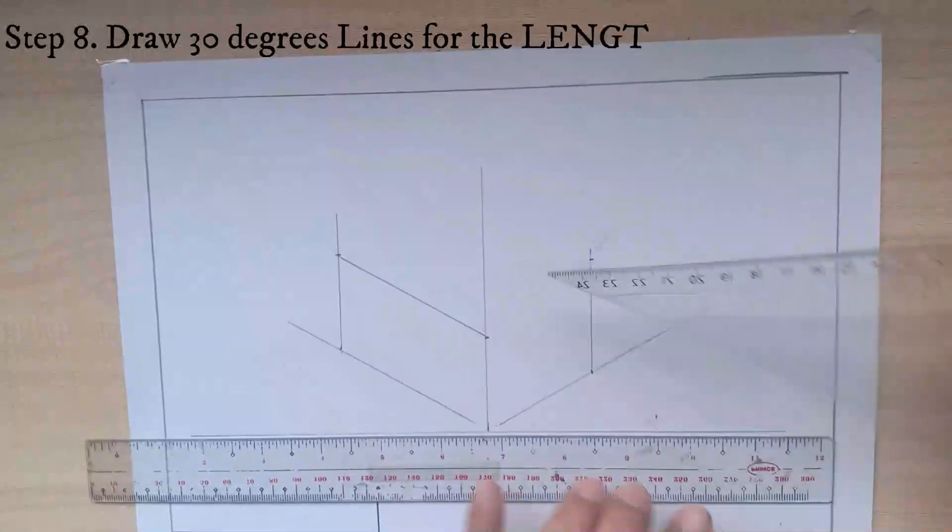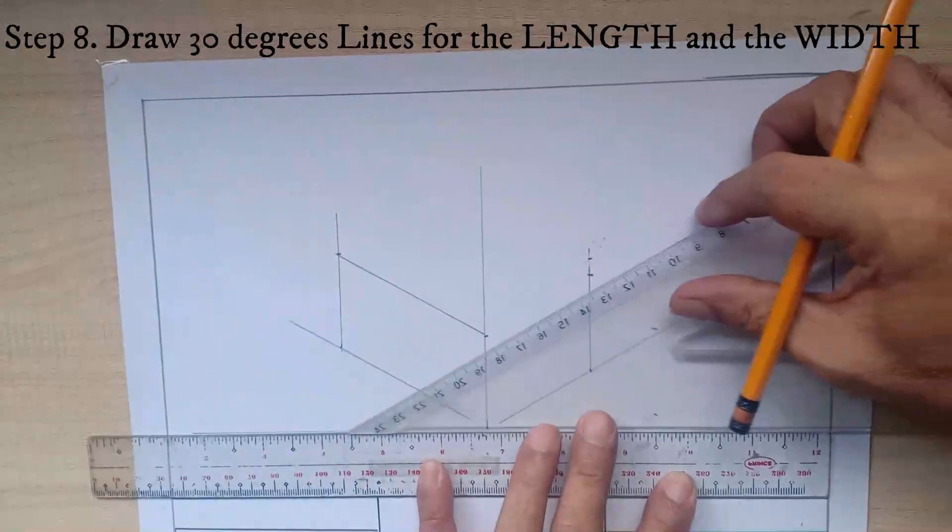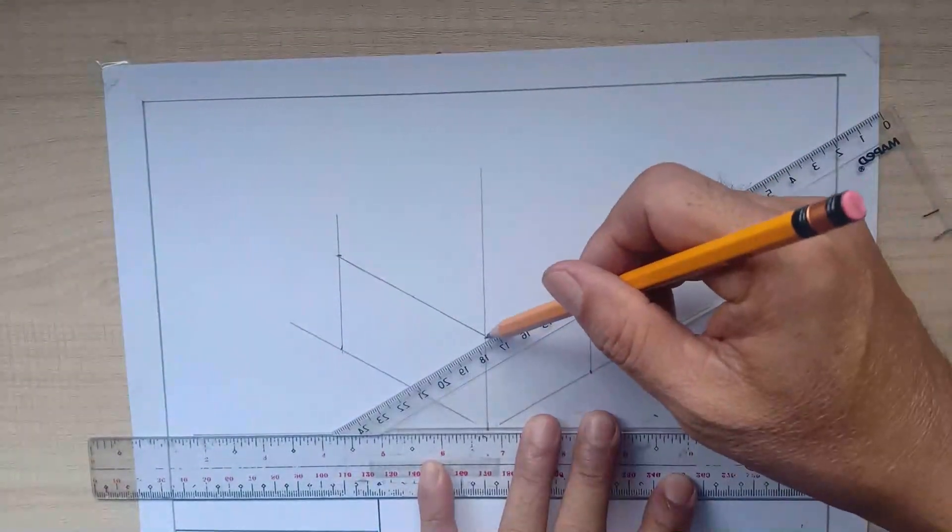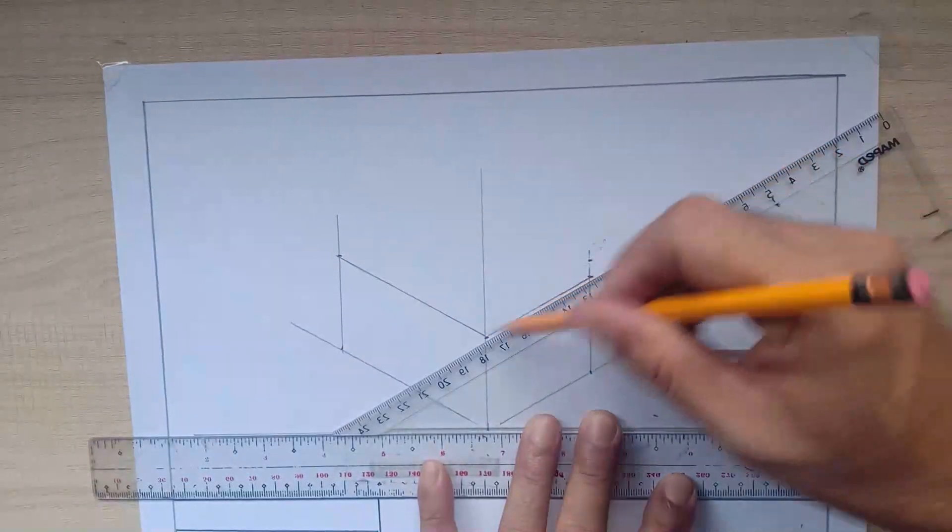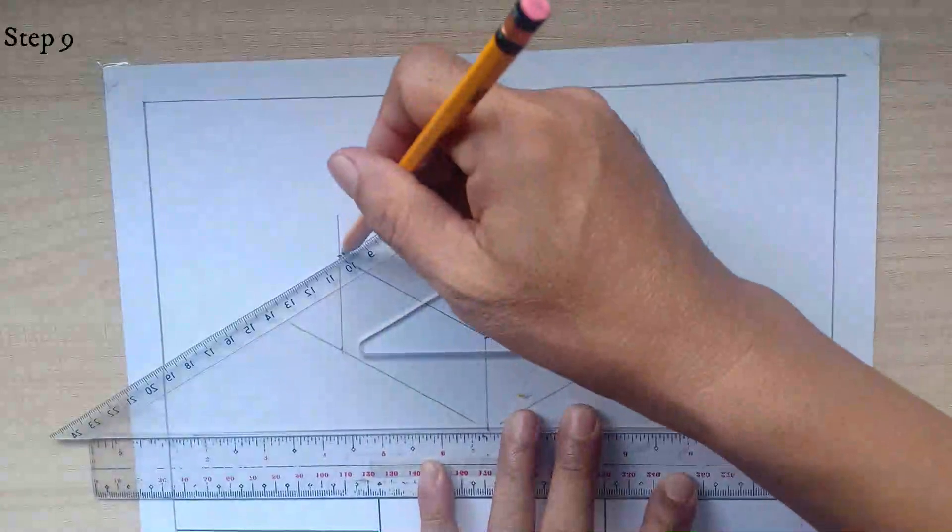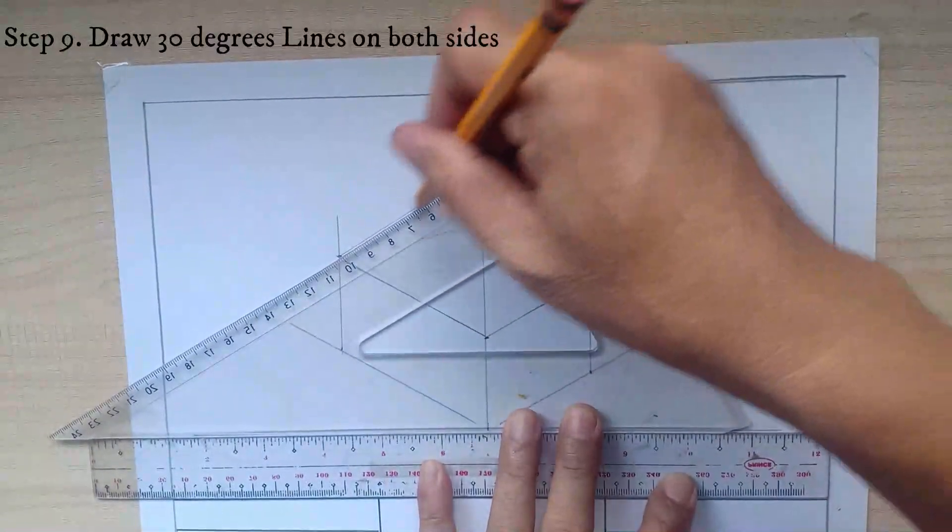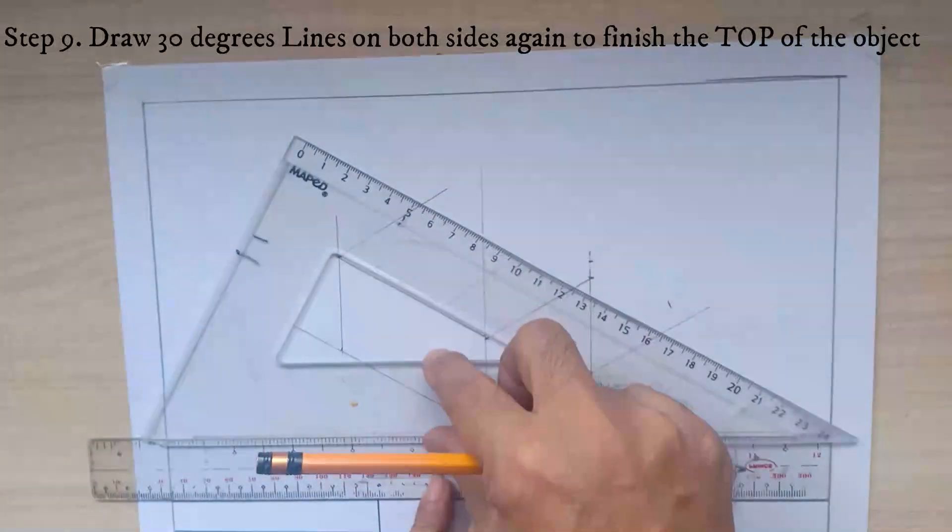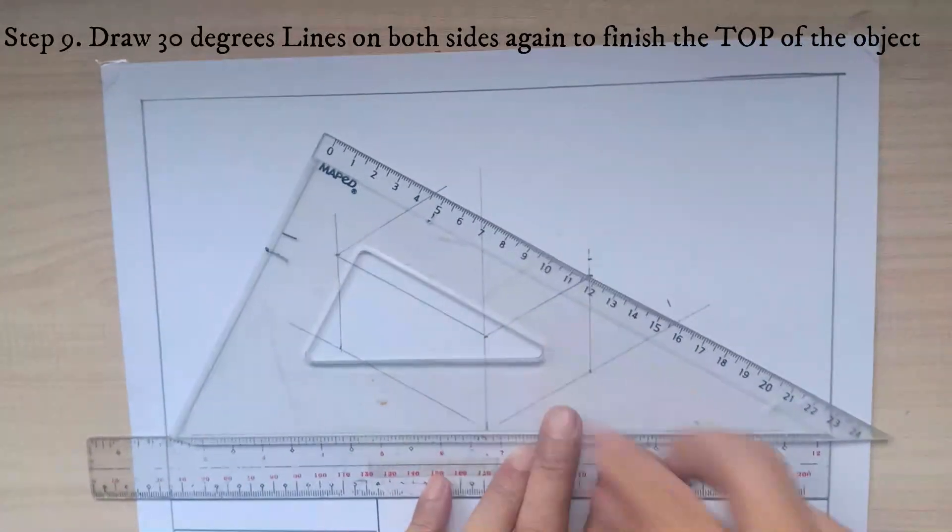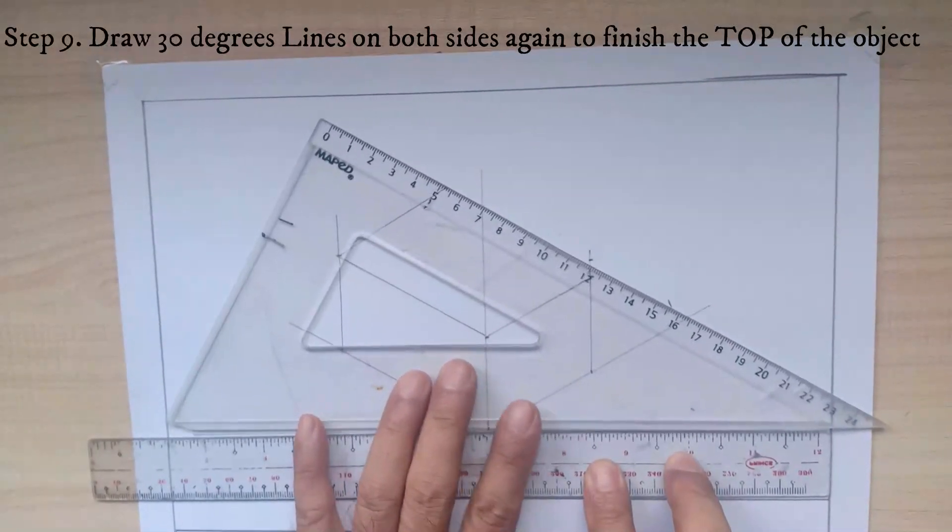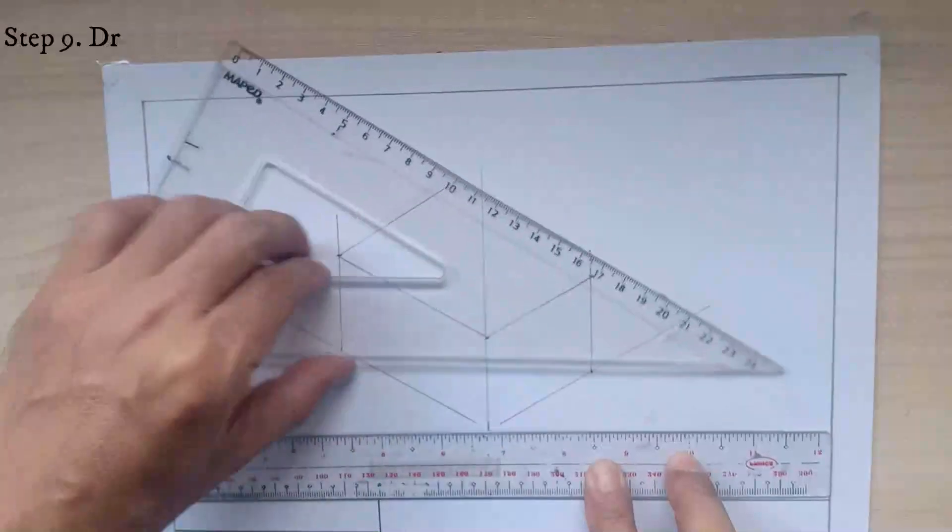Then you can use a ruler again, or you can just connect the measurements of the height. Then adjust your triangle to draw the 30 degrees lines again to complete the object or the top view or top part of the isometric.